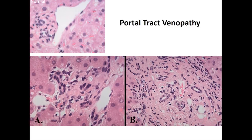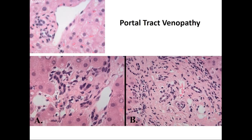Why did this patient present with portal hypertension? It makes sense because the blood from the portal vein is going into the liver, and now you have increased resistance by changing the caliber of the portal vein. Since pressure equals flow times resistance, and the flow maintains the same, with increased resistance the pressure goes up.